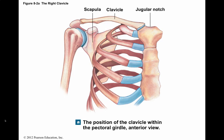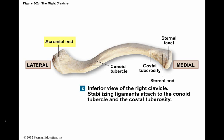The clavicles are S-shaped bones that originate at the superior lateral border of the manubrium of the sternum, lateral to the jugular notch. The clavicle then curves to form an articulation with the acromion, which is a projection on the scapula. The acromial end of the clavicle has a rough, inferior surface where ligaments and muscles attach. It is easy to distinguish a left from a right clavicle once you know which end is the medial end and which side is inferior.